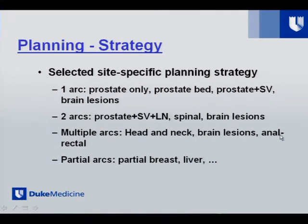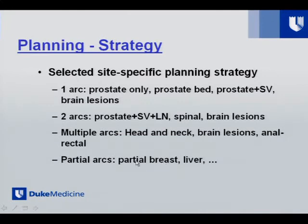For rectal and anal rectal cancer, we typically use two arcs or more. Partial arcs work well for uniform regions like partial breast treatment — accelerated partial breast with 10 fractions — where we found partial arc achieves results as good as standard approaches. Some liver and lung tumors treated with breath hold also benefit from partial arcs.